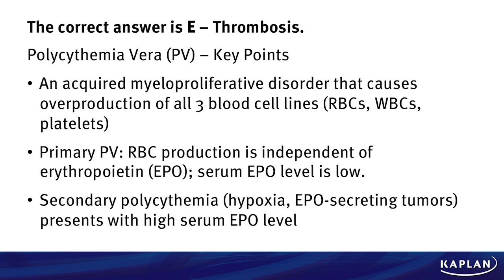So what is PV? It's an acquired myeloproliferative disorder that causes overproduction of all three cell lines. That's why we have high RBCs with the hematocrit, high white blood cells, and high platelets, as seen in this question stem. With primary polycythemia vera, RBC production is actually independent of EPO. EPO, which is made by the kidneys, normally increases RBCs — but in primary PV, the EPO level is actually low, and RBCs are being made not dependent upon EPO. It's part of the disease itself.